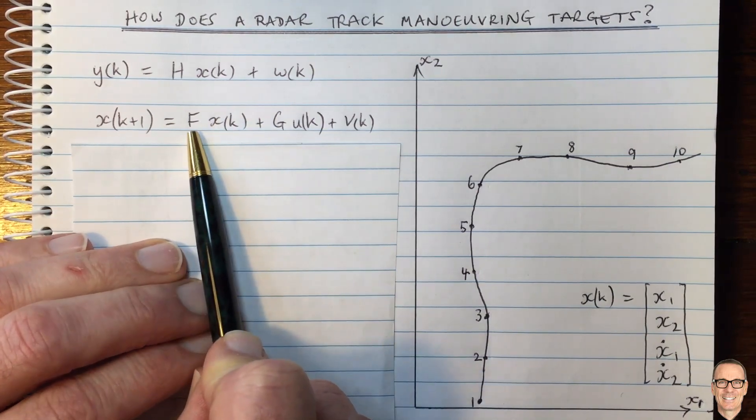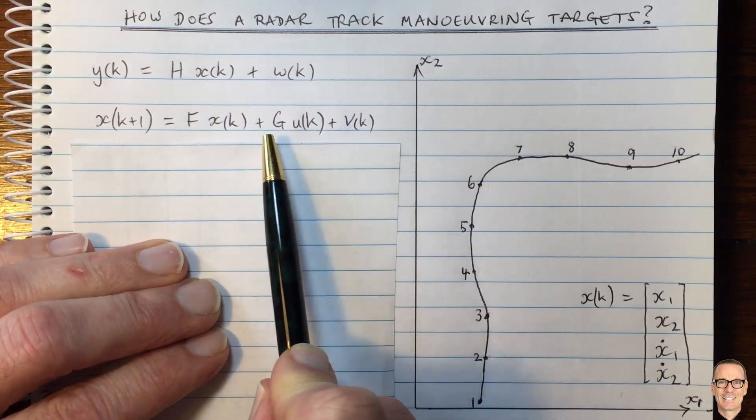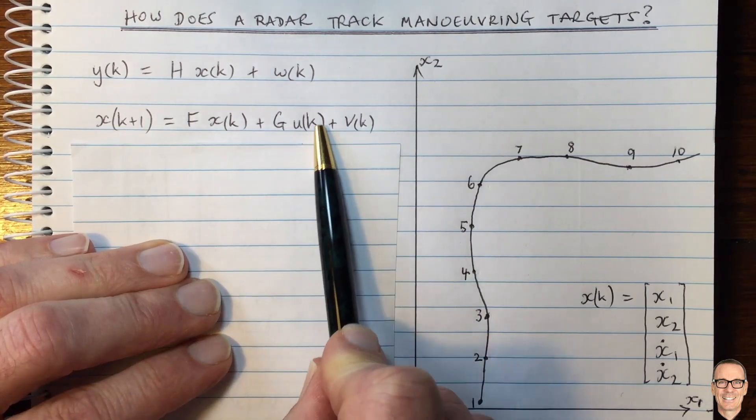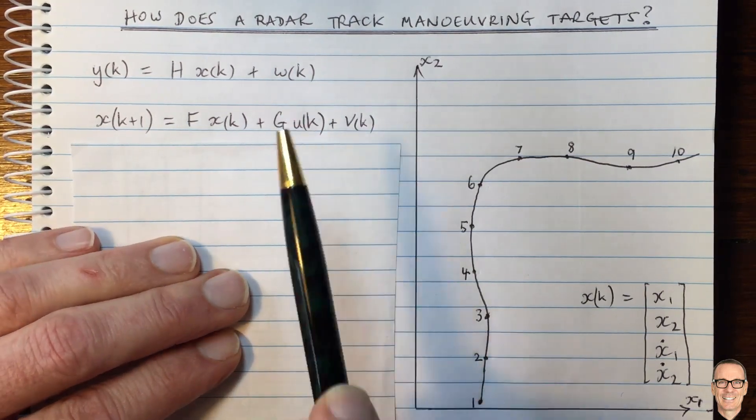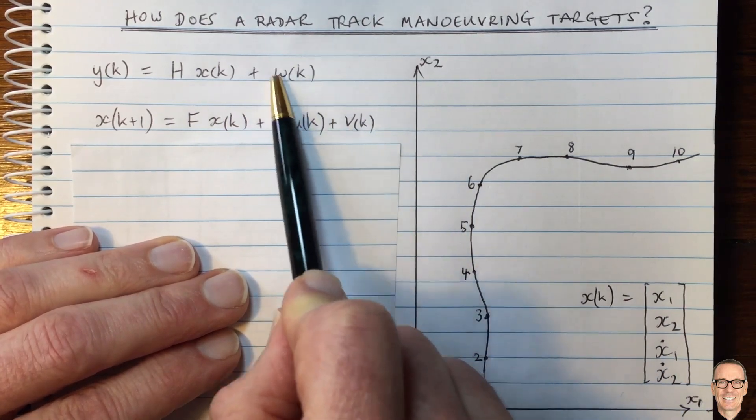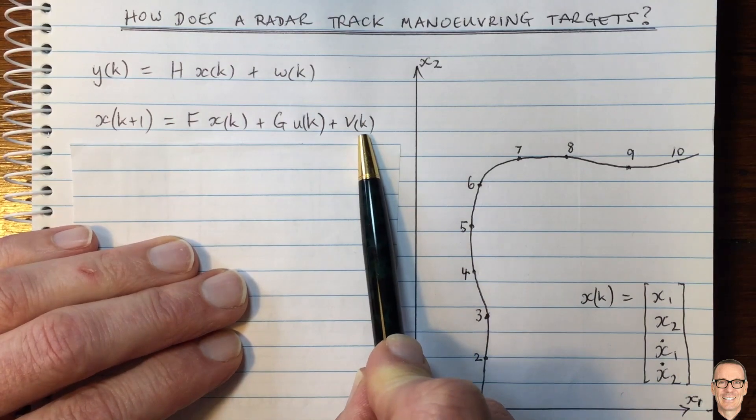And we multiply that by a matrix F to get the new location. And we've got this maneuvering target component plus some system noise. So this is the measurement noise and this is what we call system noise.